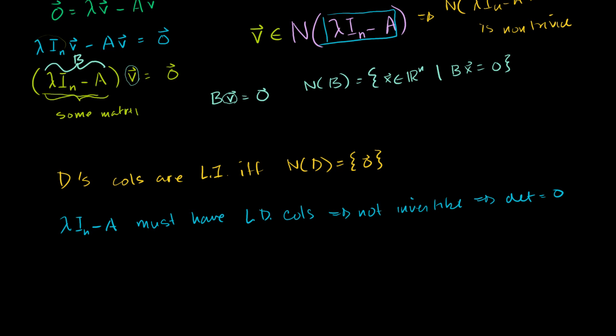So the determinant, let me write this, so if and only if, A v is equal to lambda v for non-zero v's if and only if the determinant of lambda I_n minus A is equal to 0. The determinant is just a scalar factor. And so that's our big takeaway.